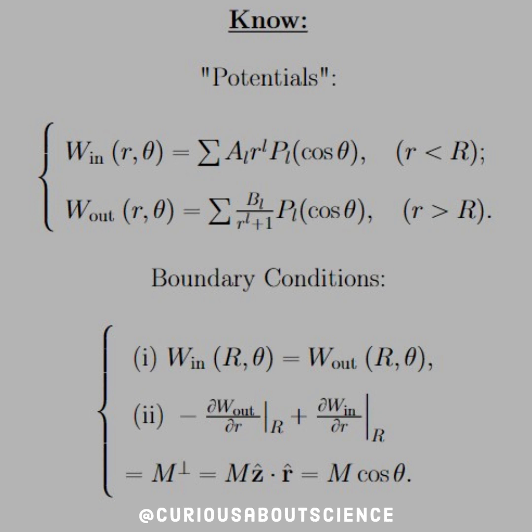So let's write out the potentials of the spherical case where we only have an AL for the inside component and a BL for the outside component. This has to do with the boundary conditions of the potential going to zero at infinity.